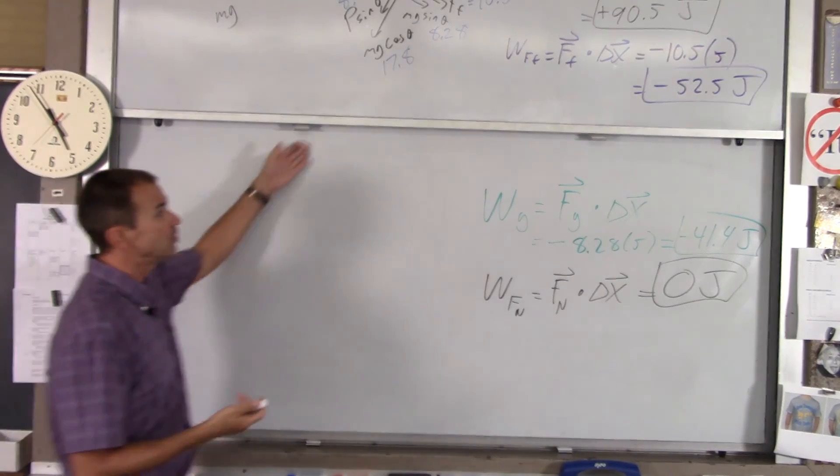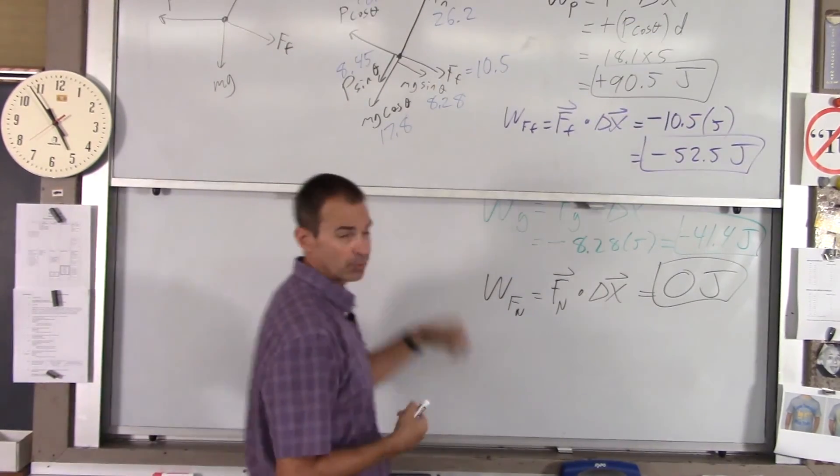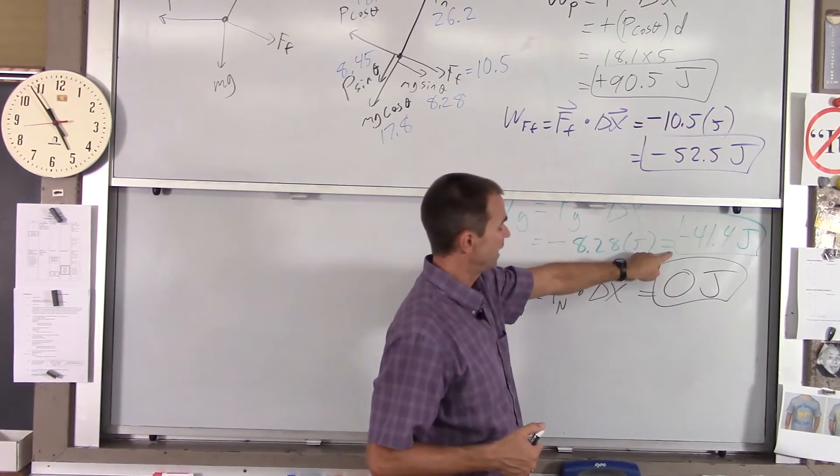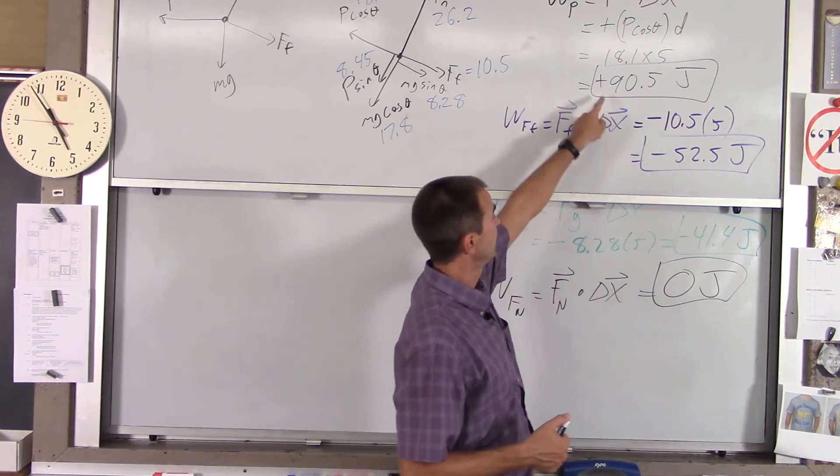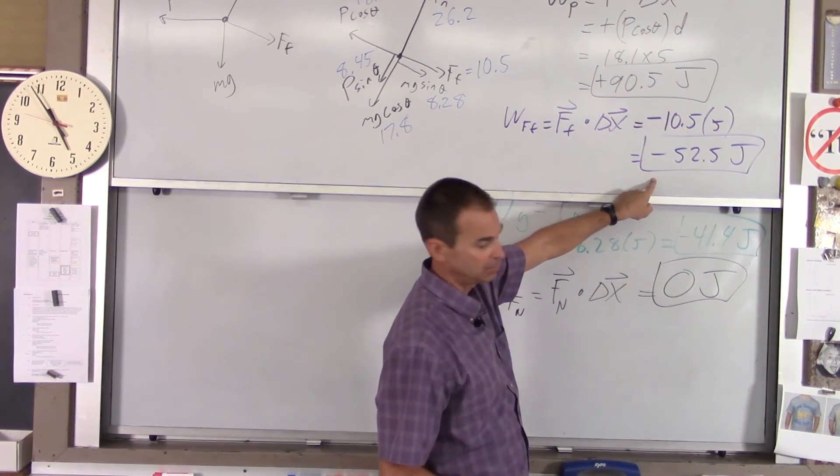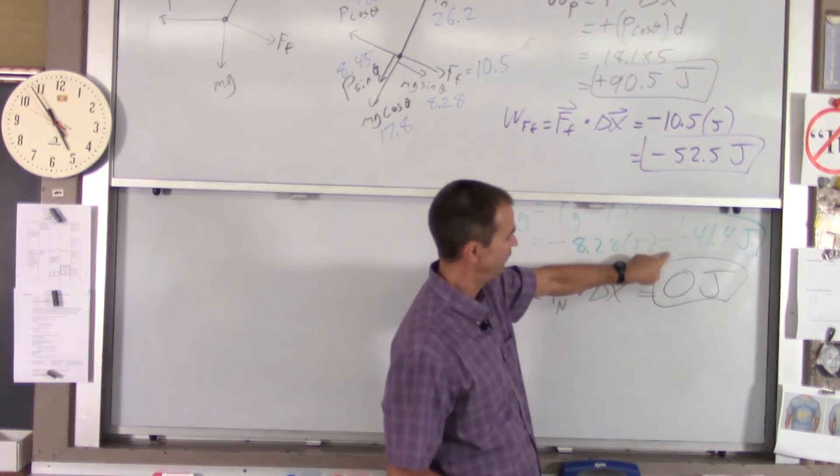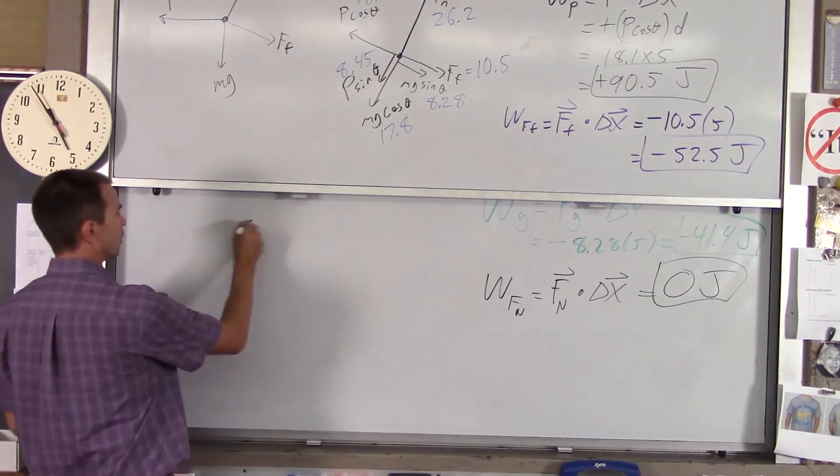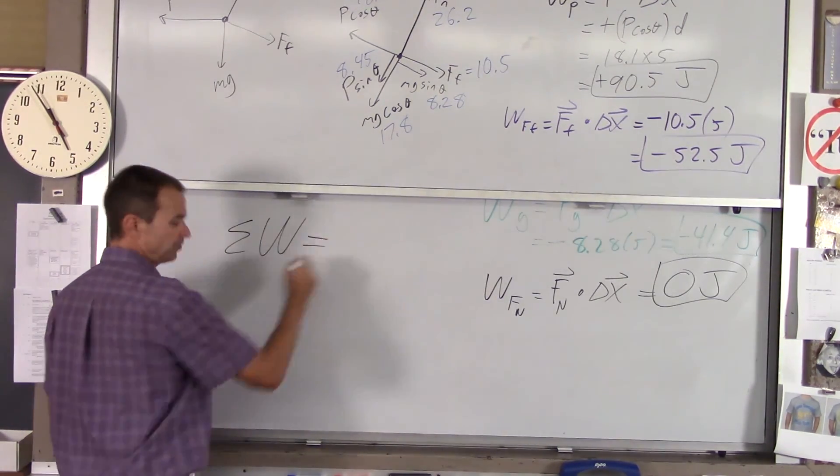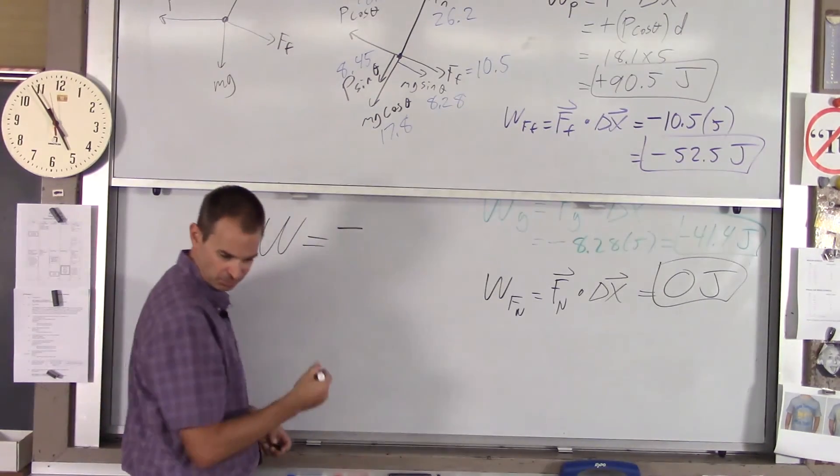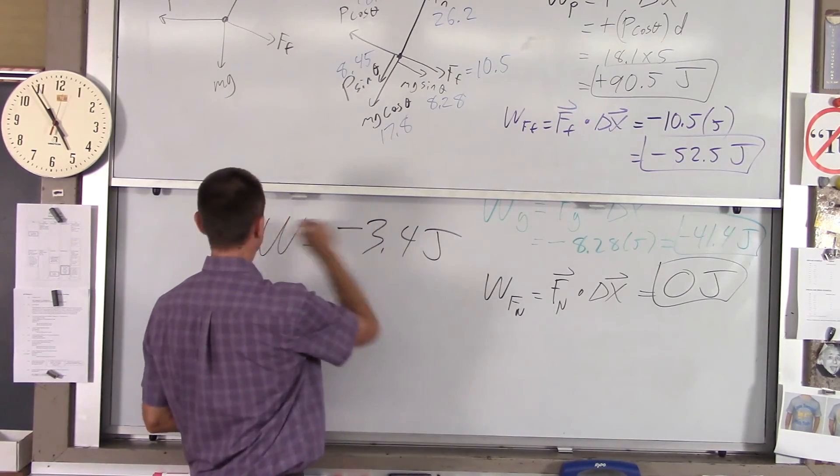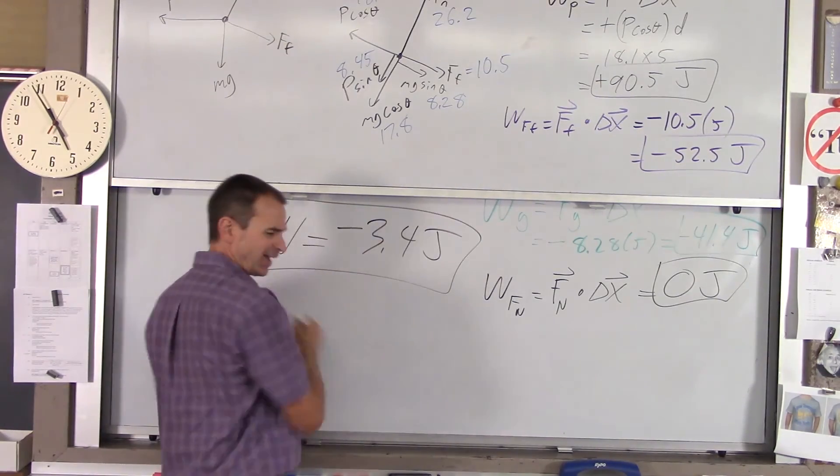The last thing we asked for was the net work done on the crate. All you have to do is add your four numbers together: work done by the push, friction, gravity, and normal. You're gonna take 90.5 minus 52.5 minus 41.4 plus zero, and if you do all that, your net work is negative and it's kind of small, 3.4 joules.